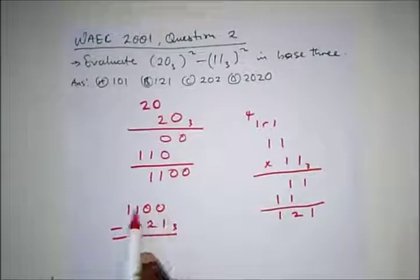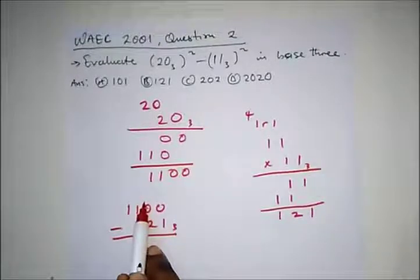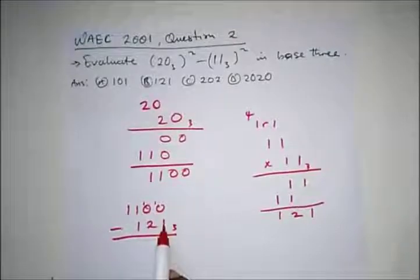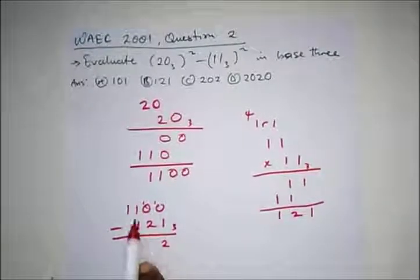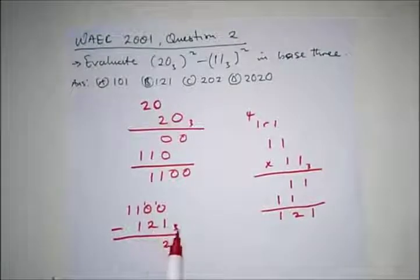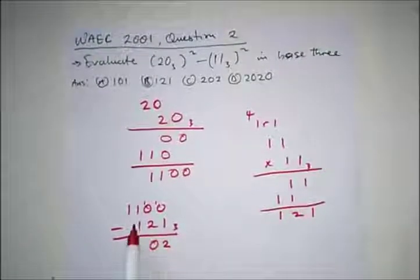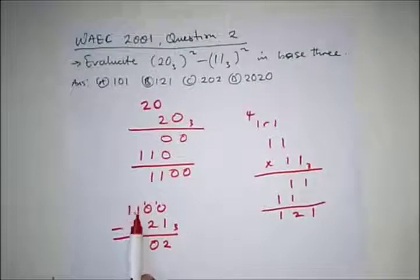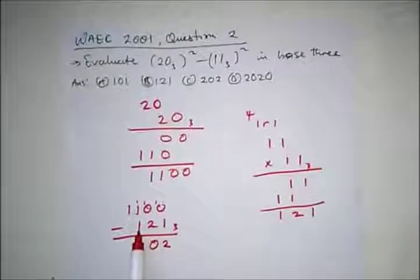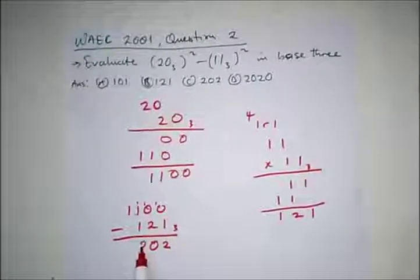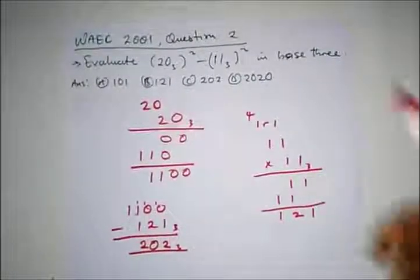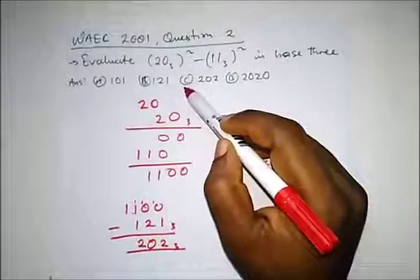We need to borrow. When we borrow, we get 3 in that position. 3 minus 1 gives us 2. We are left with 2, and 2 minus 2 gives 0. Then we borrow again, getting 3 minus 1 which is 2. So our final answer is 202 in base 3, and the correct option is option C.